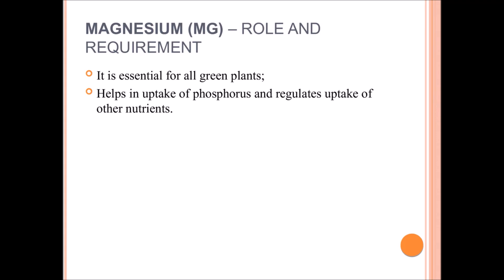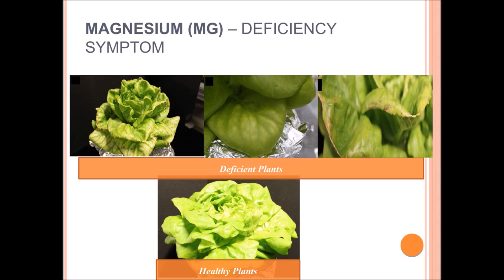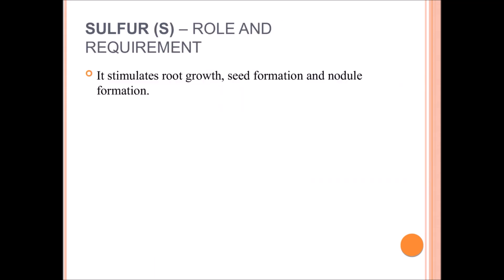Magnesium is an essential plant nutrient and is a component of chlorophyll. It helps in phosphorus uptake and uptake of other nutrients. Magnesium deficiency always shows on the lower leaf as interveinal chlorosis, and the affected leaf easily detaches from the plant. In acute deficiency it produces dead spots.